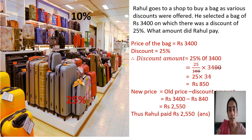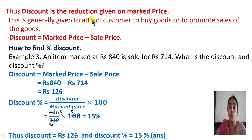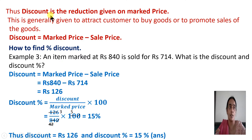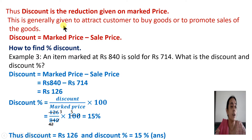Let's understand the theory about discount. Discount is the reduction given on the marked price — whatever is the printed price, this reduction is given on it, and that is known as discount. You must have heard your mother say at a shop: how much discount are you going to give? That means how much reduction will you give. Discount is generally given to attract customers to buy goods or to promote sales of the goods.